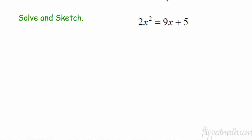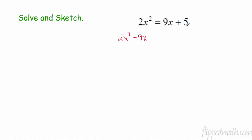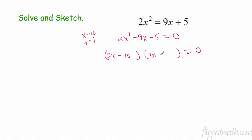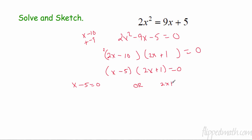Now we're going to sketch and solve. Whenever we have a squared term and a linear term, we need to get them on the same side. I'm going to subtract 9x to get 2x² minus 9x, and subtract 5 to get everything on one side. I need two numbers that multiply to negative 10 and add to negative 9 — that's negative 10 and positive 1. I can factor 2 out of the second group, giving (x − 5)(2x + 1) = 0.